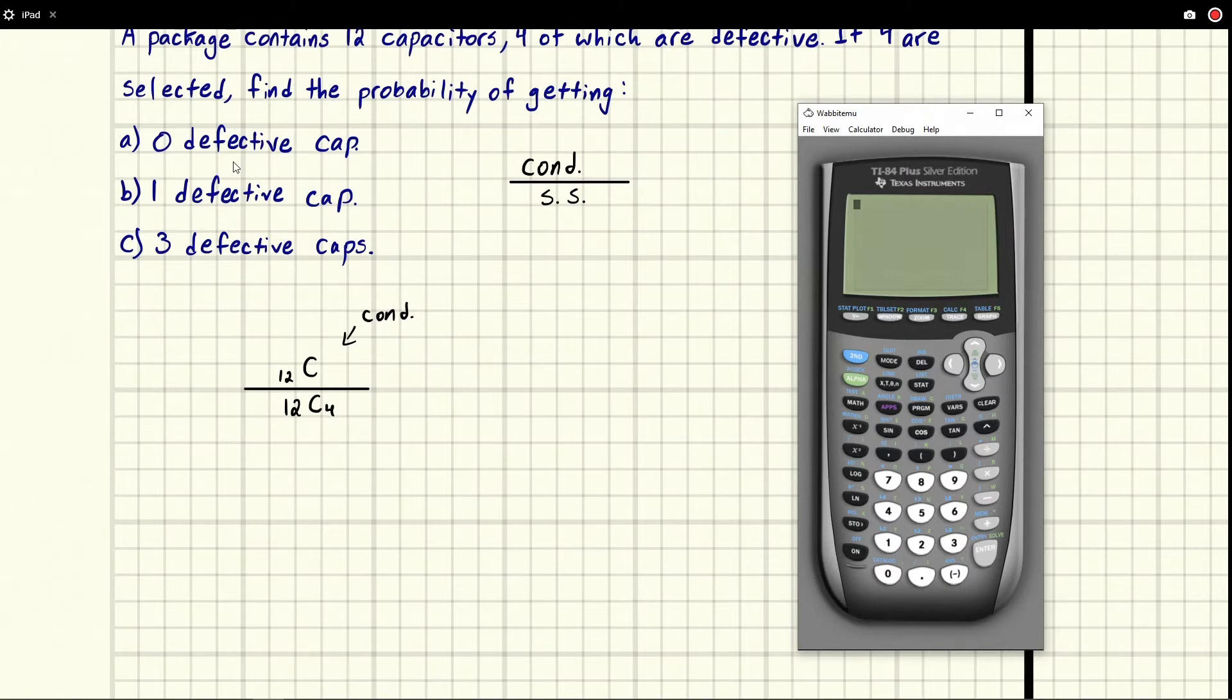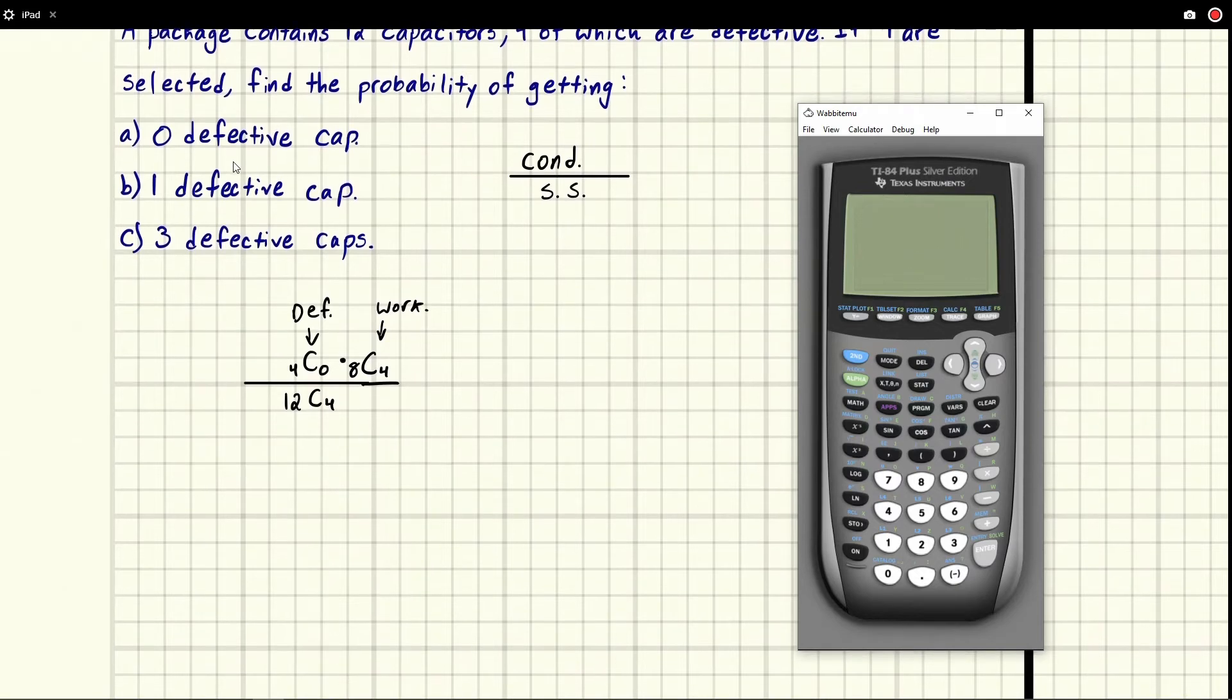So we would have 12 capacitors and we want to pick defective ones. So actually there's only four defective capacitors. We choose none of them out of the four defective capacitors. So if there's 12, four defective, and we choose none, that means the other eight, we'd have to choose four of the working capacitors. This one is we don't pick any defective and we pick all working. And there's 12 total. That's why this one's eight, because eight plus four is 12.